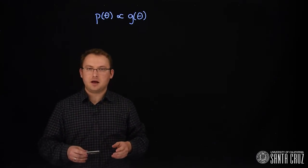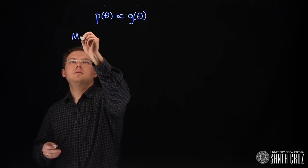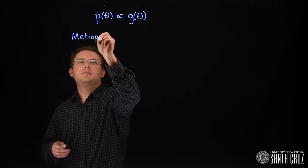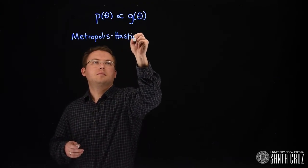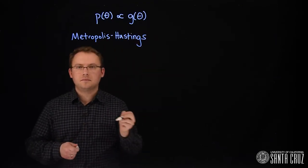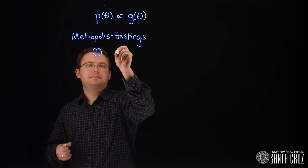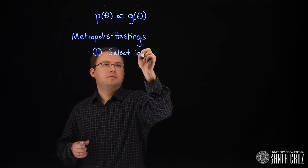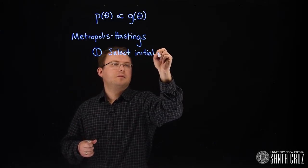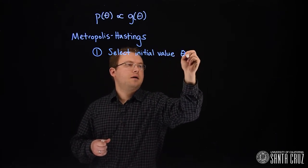The Metropolis-Hastings algorithm will proceed as follows. The first step is to select an initial value for theta. We're going to call it theta naught.